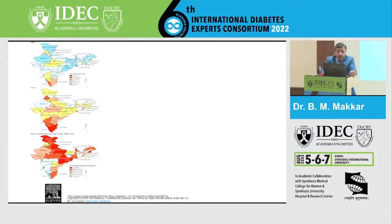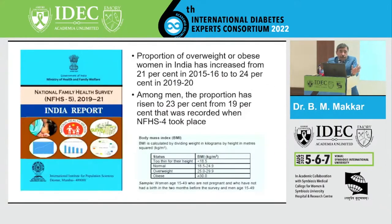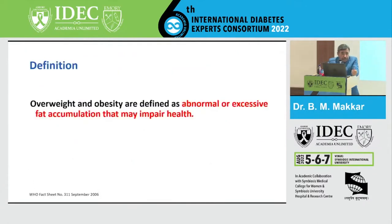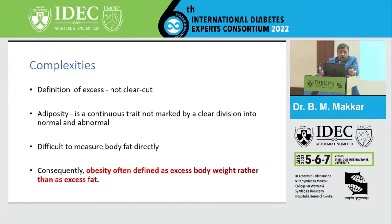Obesity is defined as abnormal or excessive fat accumulation that may impair health, so the definition does not define weight — it is abnormal or excessive fat associated with poor health. But the word obesity doesn't convey this. It is a complex subject. The definition of excess fat is not clear; it is a continuous trait, not marked by clear division into normal and abnormal. It is very difficult to measure body fat. Unless we are doing an MRI or advanced DEXA on every individual, we can't measure body fat. Because we can't define body fat, we are using surrogate measures to define obesity based on body weight.